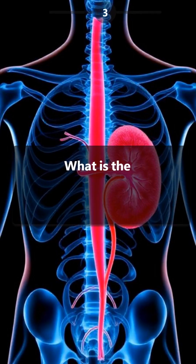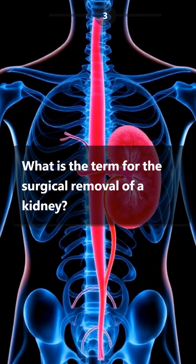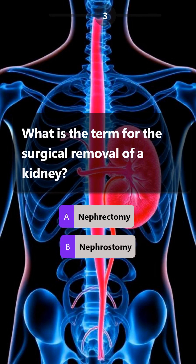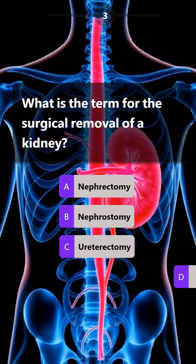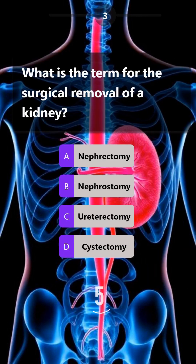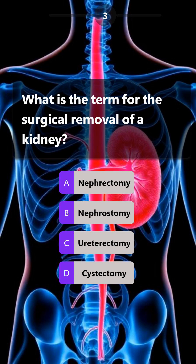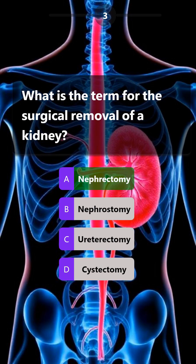What is the term for the surgical removal of a kidney? Nephrectomy, nephrostomy, ureterectomy, cystectomy. Answer is: nephrectomy.